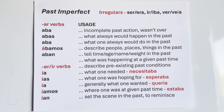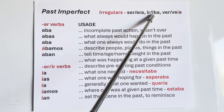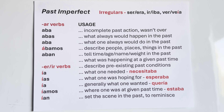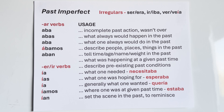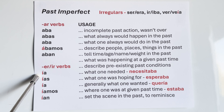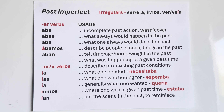Third usage: what one would always do in the past. I would always drink milk — siempre tomaba leche. We would always go to church — siempre íbamos a la iglesia. It would always rain in the winter — siempre llovía durante el invierno. I would always eat a lot for breakfast — siempre comía mucho para el desayuno.